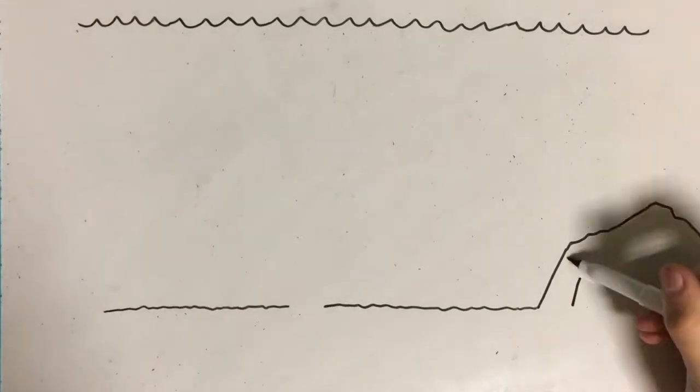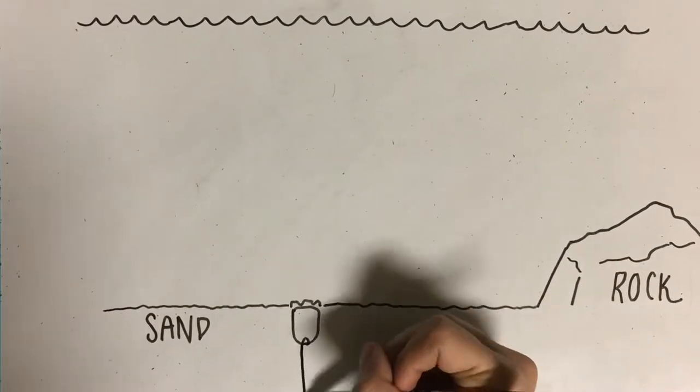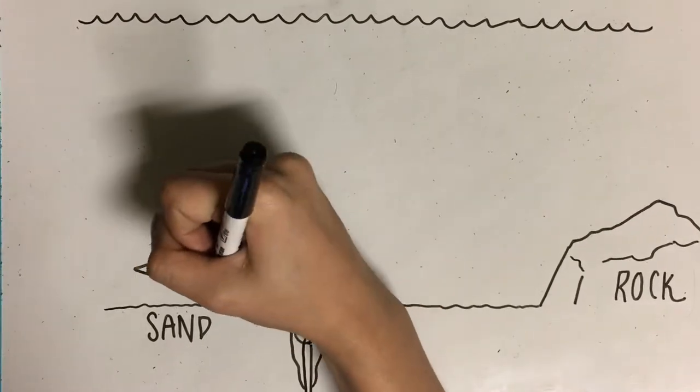Brachiopods are most commonly found in cold waters, and while they are found at all depths, they are generally situated along the continental shelf. While some species attach themselves to substrates such as rocky outcroppings using pedicles, others that live in more shallow waters burrow into the sediment.